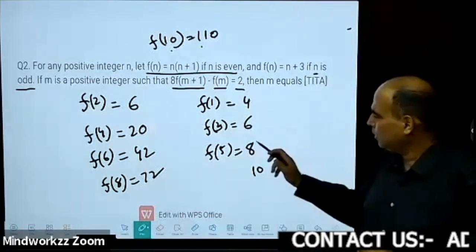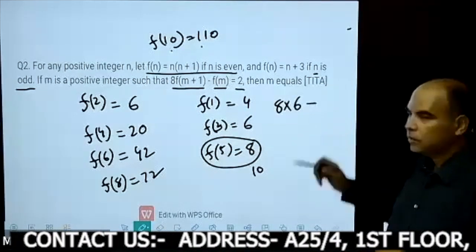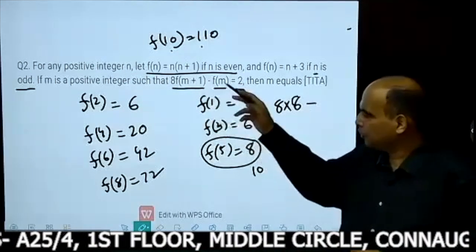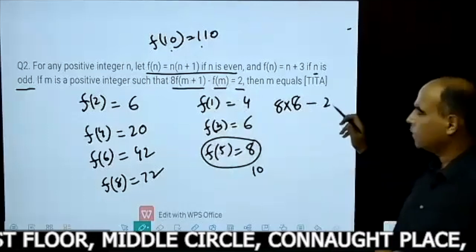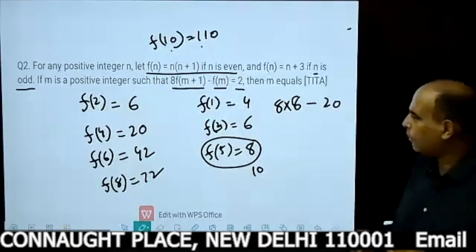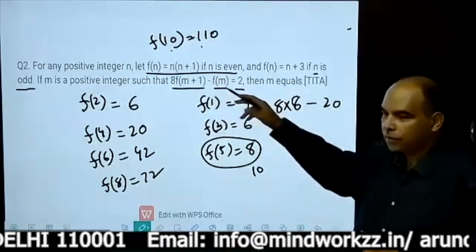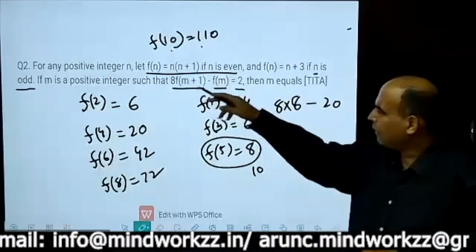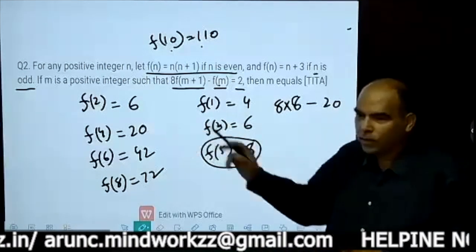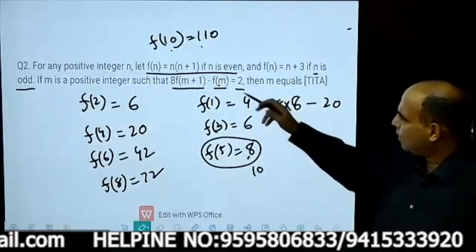Let's verify: at m = 5, 8 times f(5) minus f(4) — f(5) is 8, so 8×8 = 64, minus f(4) = 20, giving 44. That doesn't work. Then at m = 6, f(6) is 42 and f(7) would be checked similarly.